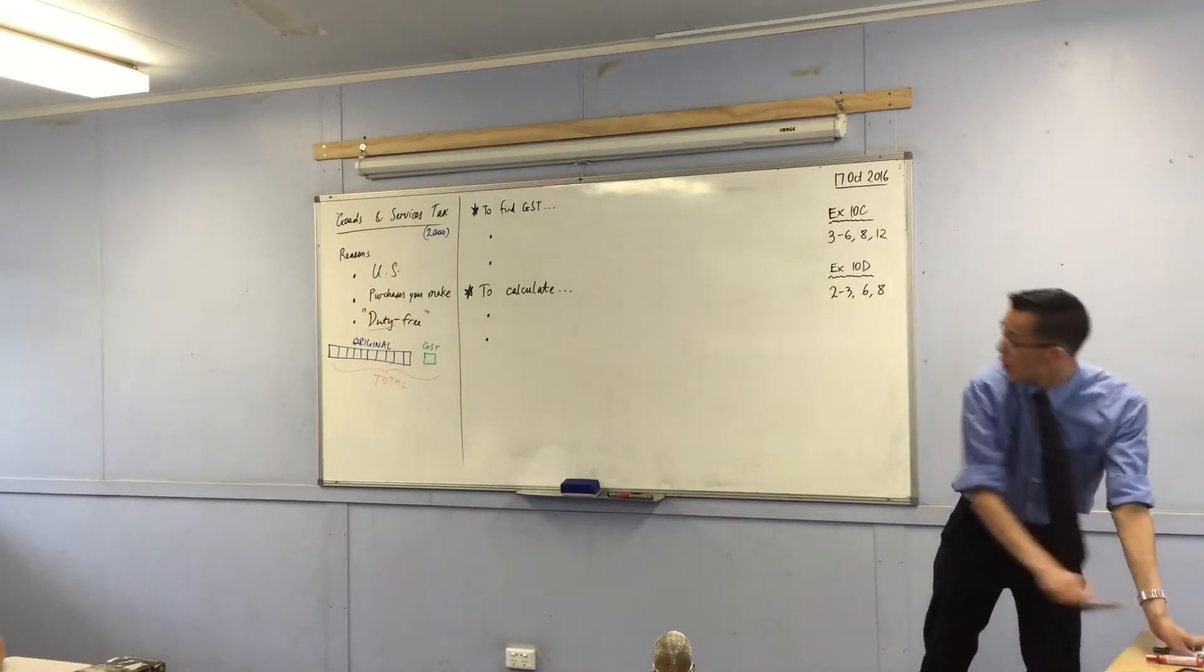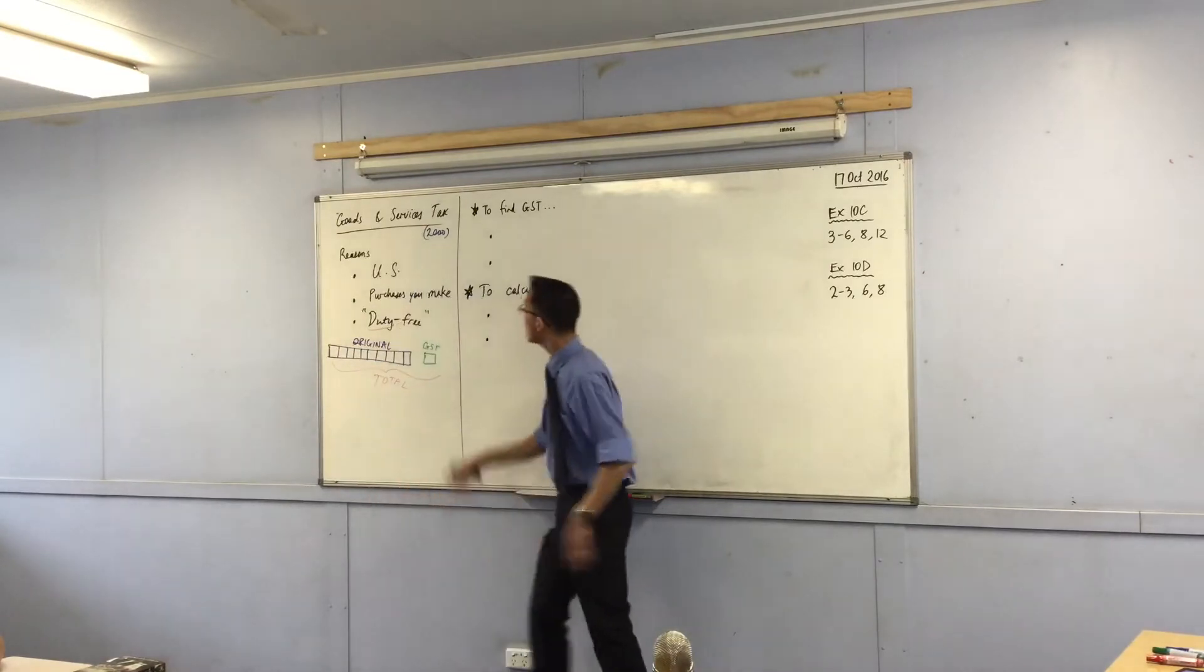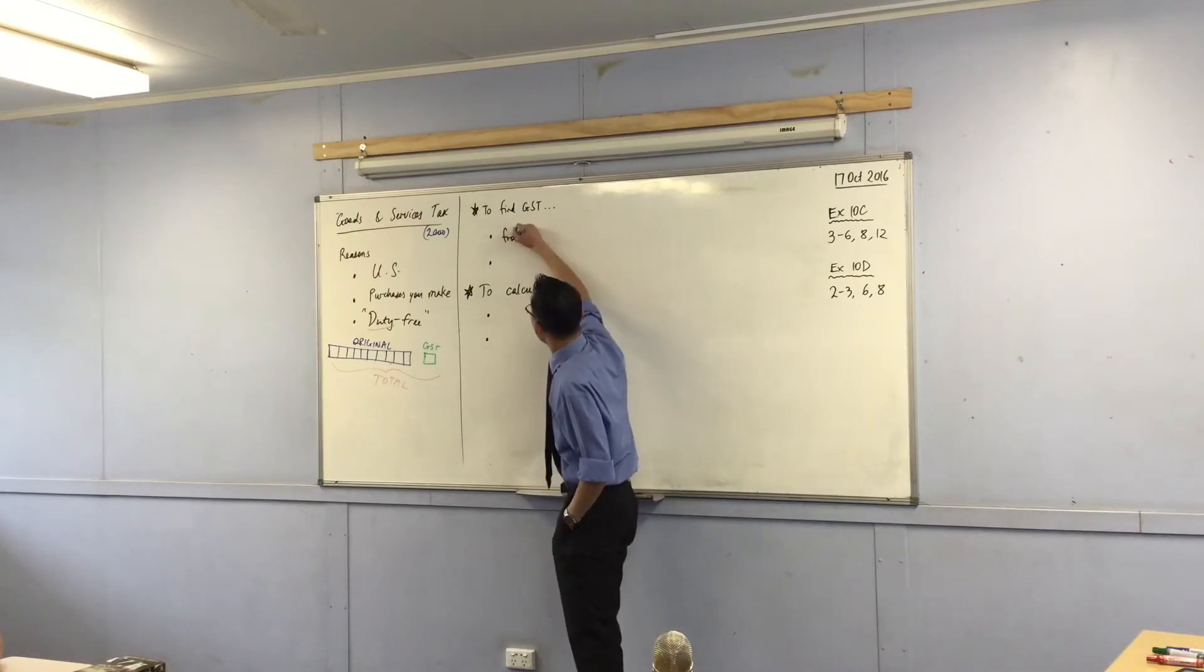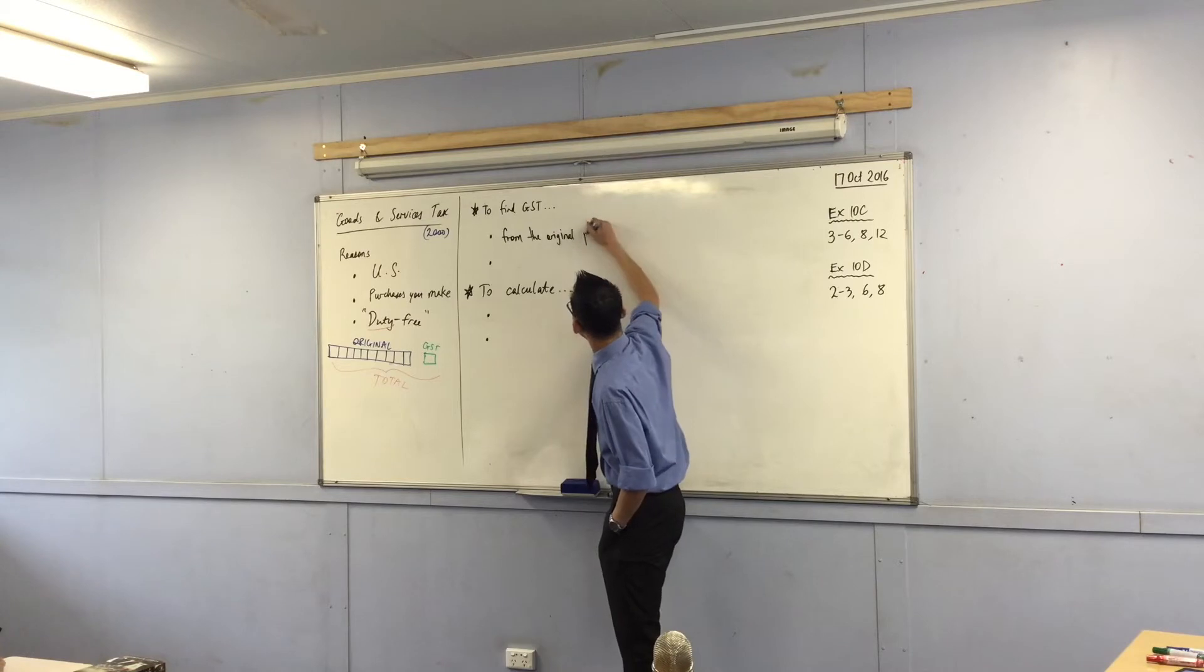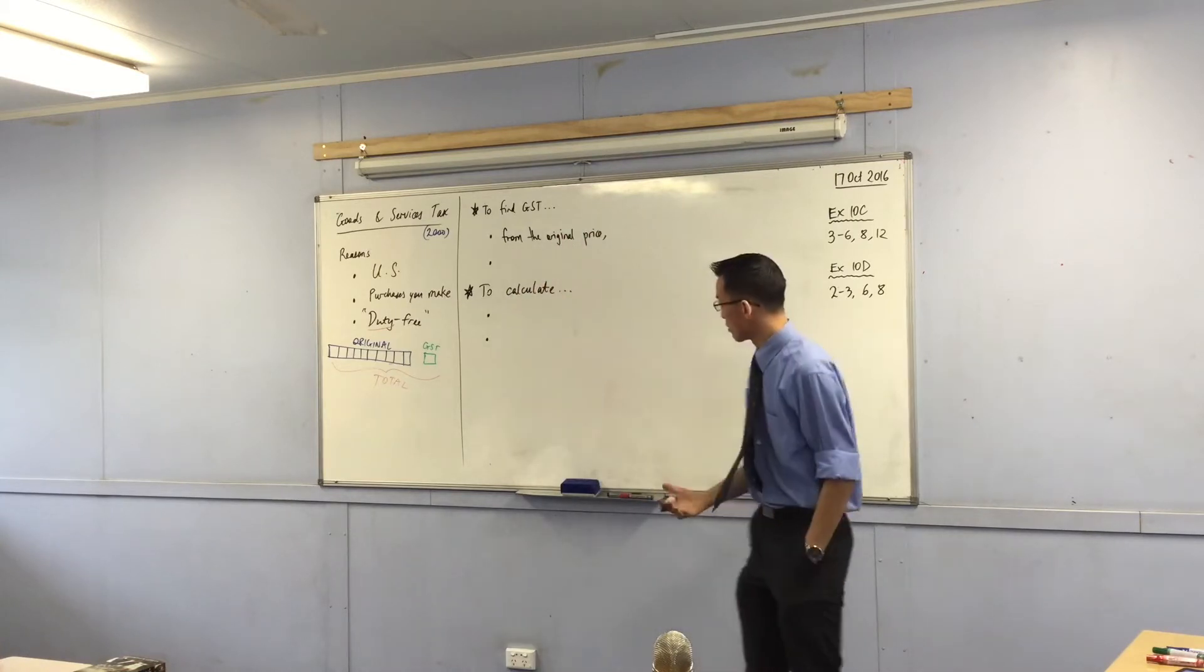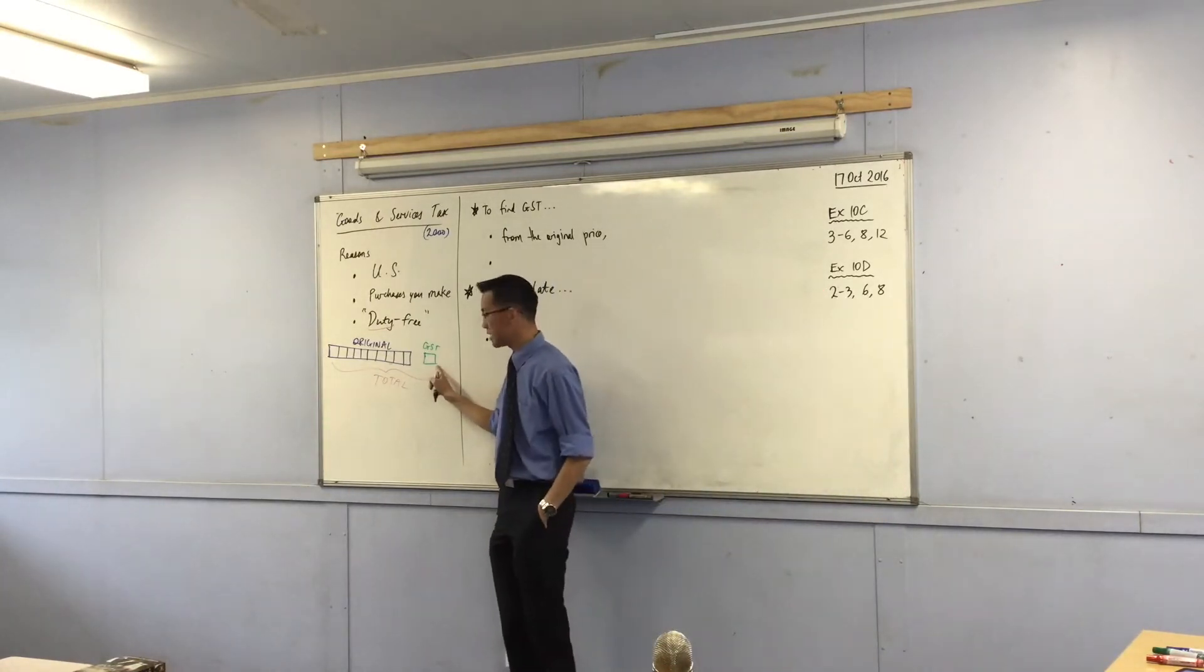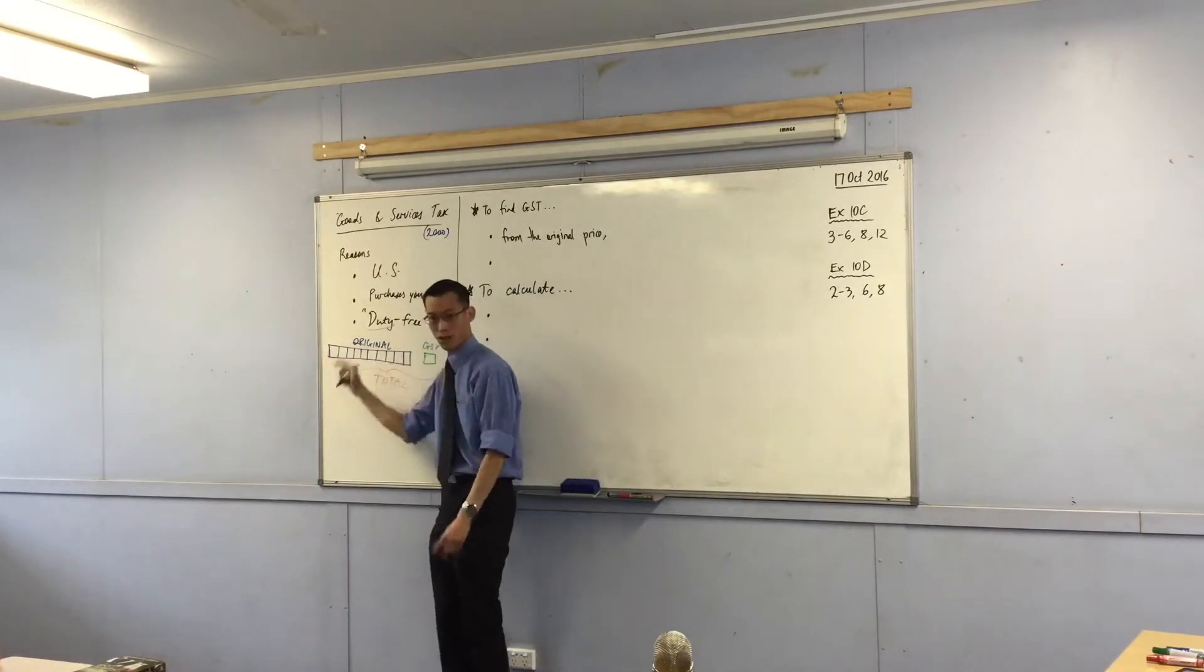Now therefore, whether you are thinking about the total or the original makes a really big difference if you're trying to find the GST. So for example, to find GST from the original price, you have a choice. You can say this in a lot of different ways, but we're going to be doing the same calculation every time. You told me that this GST is a tenth, it's a tenth of this whole original.